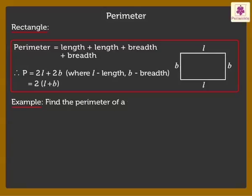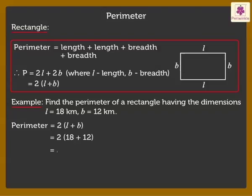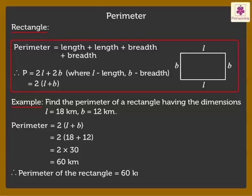Now, let us find the perimeter of a rectangle having the dimensions length equal to 18 kilometers and breadth equal to 12 kilometers. Using the formula, perimeter of the rectangle is equal to 2 into 18 plus 12, which is equal to 2 into 30, which is 60 kilometers. Thus, the perimeter of the rectangle is 60 kilometers.